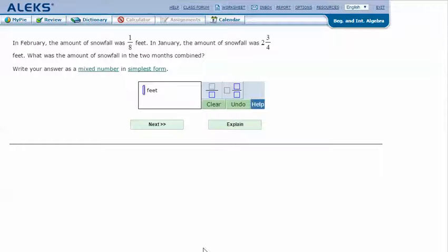In February, the amount of snowfall was one-eighth feet. In January, the amount of snowfall was two and three-fourths feet. What was the amount of snowfall in the two months combined? Write your answer as a mixed number in simplest form.